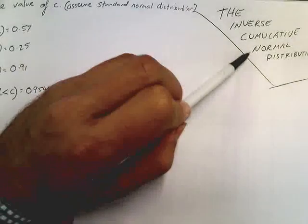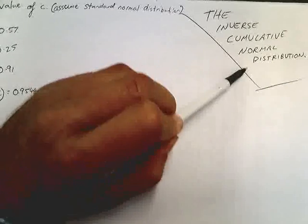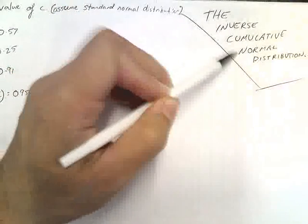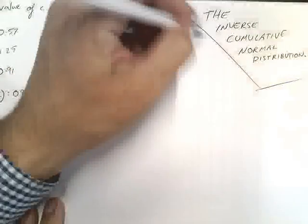Okay, so we're still working on the normal distribution. This time we're using the inverse cumulative normal distribution. Otherwise, sometimes it's just called the inverse.